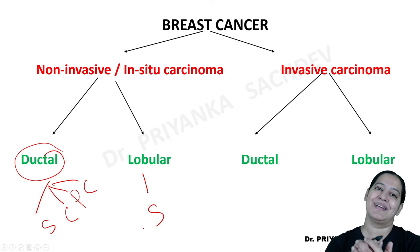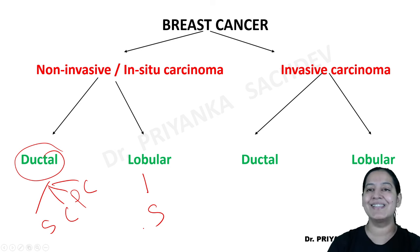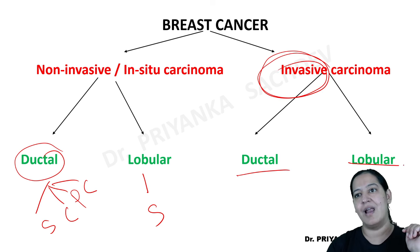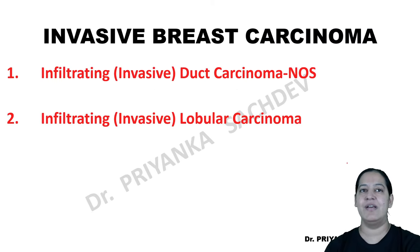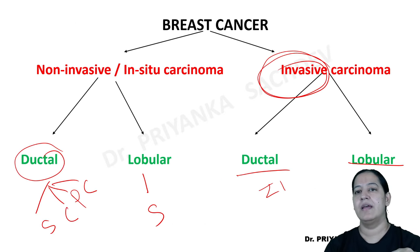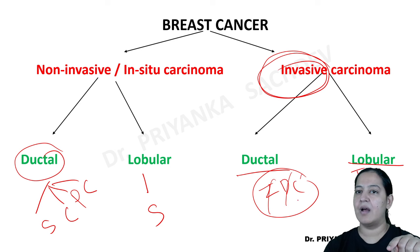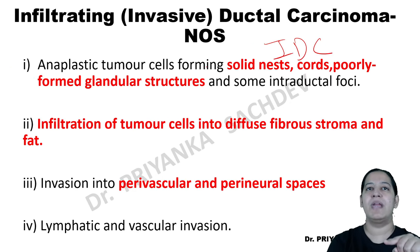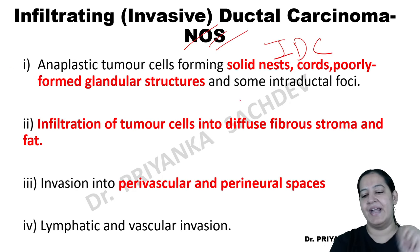Both DCIS and LCIS can convert into malignancy in the future — both are pre-malignant. Once the tumors breach the basement membrane, they come into the stroma and are converted into malignancy. For DCIS the malignancy is ductal; for LCIS it is lobular. Now coming on invasive carcinomas — again two types: ductal and lobular. First let me talk about IDC — Invasive Ductal Carcinoma. IDC is known as IDC NOS — Not Otherwise Specified. It is known as simple IDC.